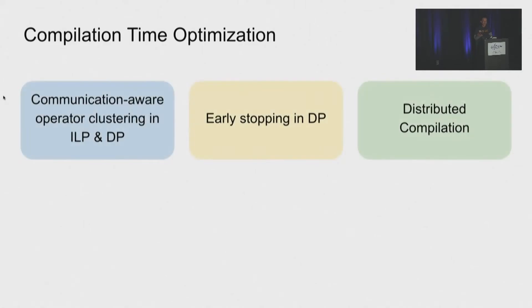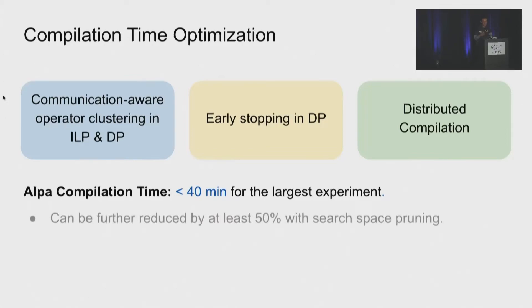So naively applying previous passes will take very long time for compilation. In Alpa, we also introduce several optimizations to reduce the compilation time. We apply communication-aware operator clustering in both ILP and DP to reduce the number of operators we need to consider in the computational graph. And we also perform early stopping in DP when it cannot produce better results. And we distributively compile different parts to further reduce the compilation time. As a result, we can reduce the compilation time to less than 40 minutes for our largest experiment. And we can further reduce it by at least 50% with the new search space pruning we implemented recently.